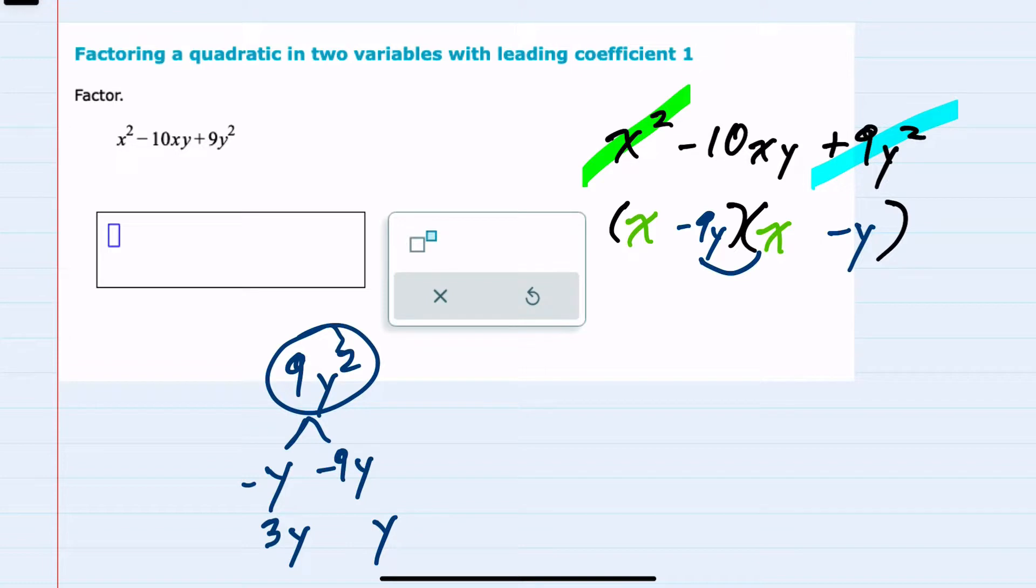When I multiply the inside I get a negative 9xy, and when I multiply the outside I get a negative 1xy. Those add to be my negative 10xy.